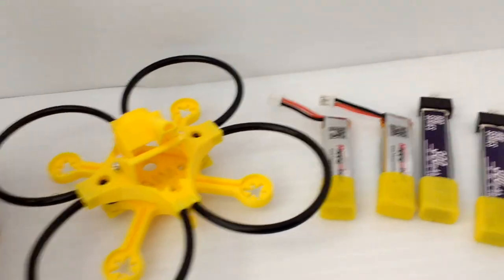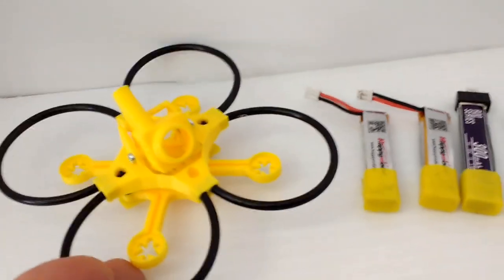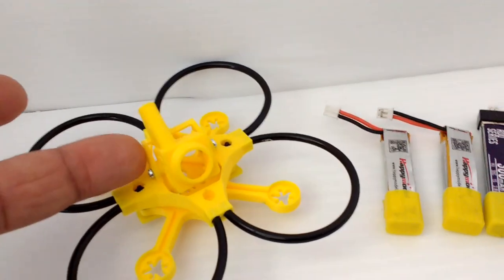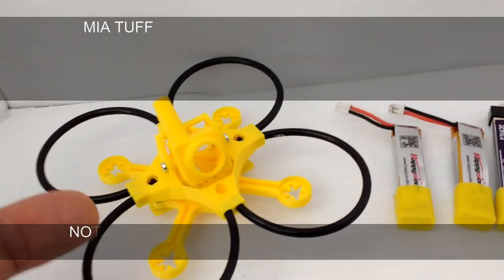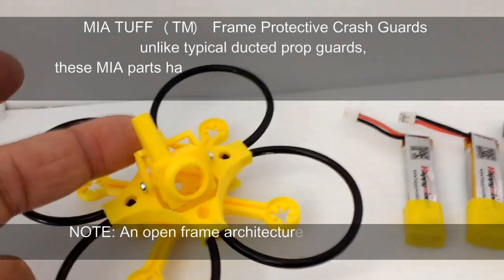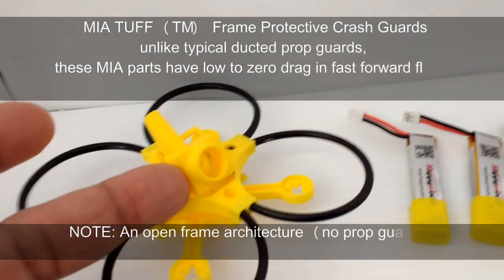In this video you have the MIA Microflight tough frame in kit form. As you see it here, there are four sections to this frame. You have the camera protection casing, which is this part here.